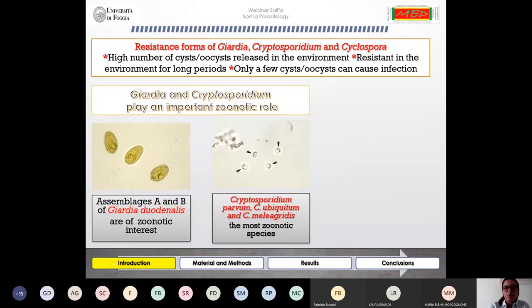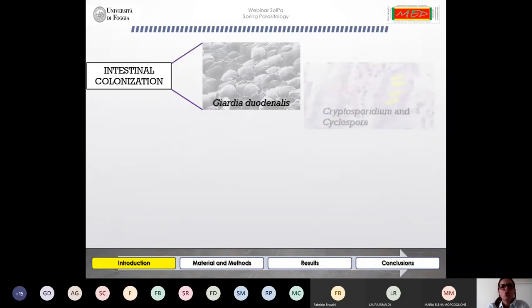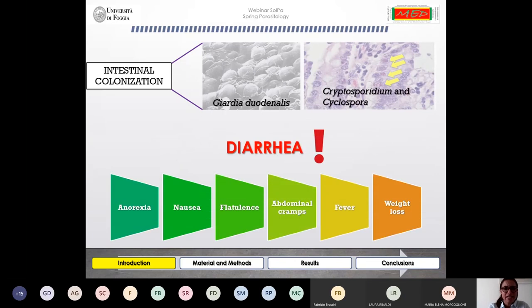Giardia and Cryptosporidium play an important zoonotic role. Assemblages A and B of Giardia duodenalis are of zoonotic interest, and Cryptosporidium parvum, ubiquitum, and meleagridis represent the most zoonotic Cryptosporidium species. Regarding Cyclospora, its zoonotic role is still in doubt. Nowadays, humans are considered the only confirmed hosts. These protozoan parasites colonize the intestine and cause gastrointestinal symptoms, the main of which is diarrhea.